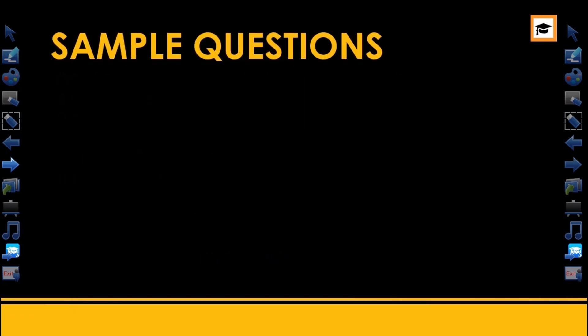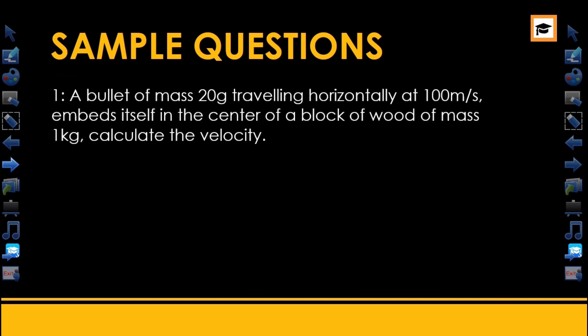We have come to the end of this series. Here are some tutorial questions. Question 1: A bullet of mass 20 grams traveling horizontally at 100 meters per second embeds itself in the center of a block of wood of mass 1 kilogram. Calculate the velocity.